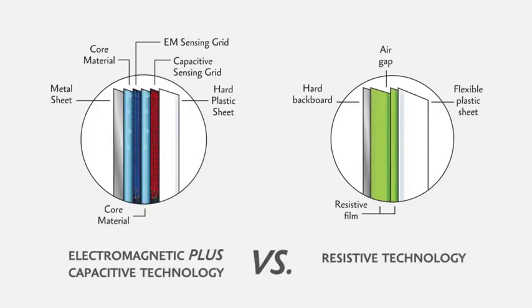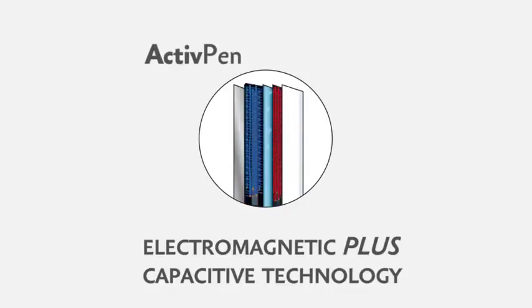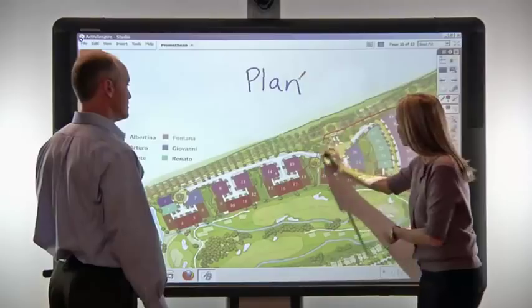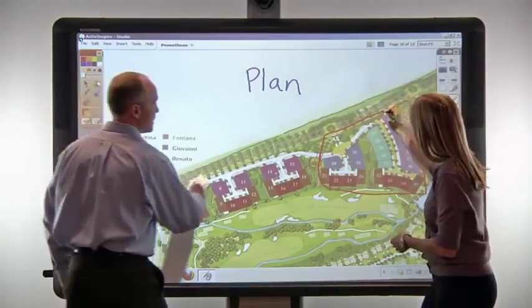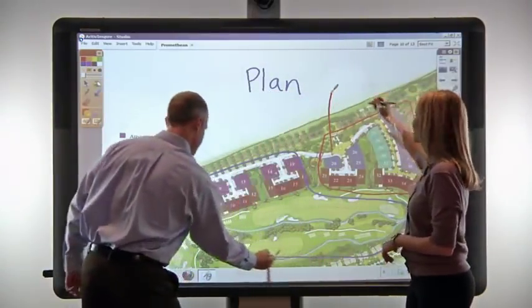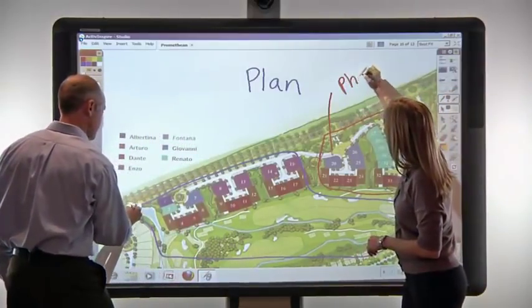ActiveBoard 500 combines Promethean's proven electromagnetic active pen technology with a sensing grid for touch to create an extremely durable and accurate interactive whiteboard that recognizes multiple inputs without interference or latency.